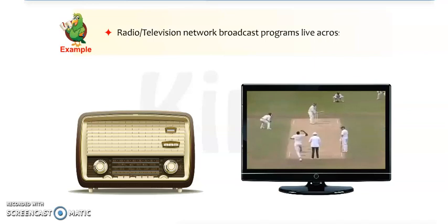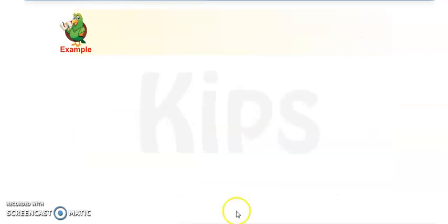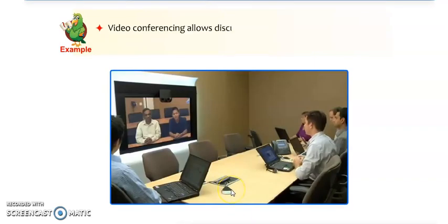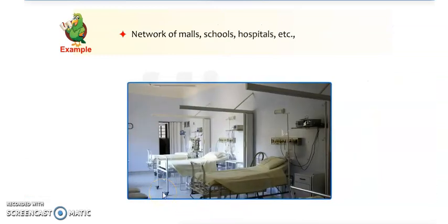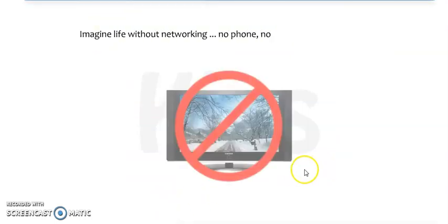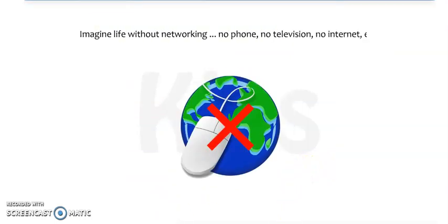Radio and television networks broadcast programs live across the globe. Video conferencing allows discussion between people at distant parts of places. Networks of malls, schools, hospitals, etc. exist all over the country. Imagine life without networking — no phone, no television, and no internet. We can't live without internet; nowadays internet is very essential for us.